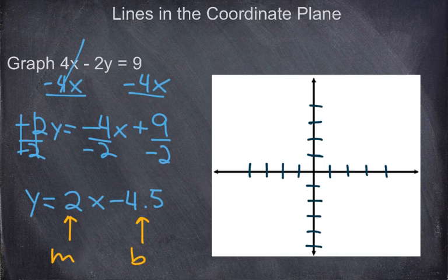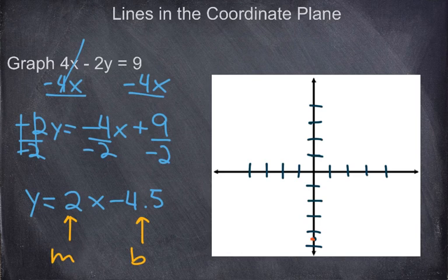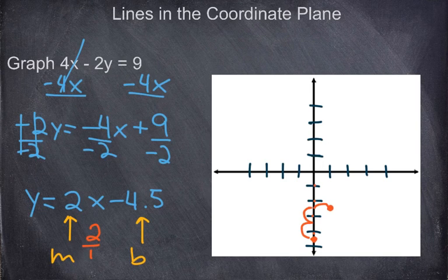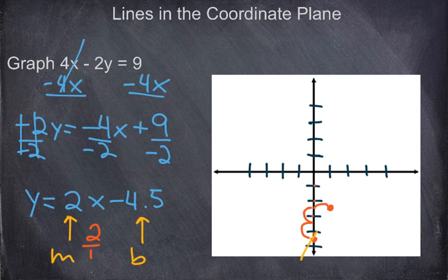Let's graph this equation. Always graph the y-intercept first — in this case negative 4.5, so go down 1, 2, 3, 4.5. It won't always land on a whole number. From there, apply the slope of 2 over 1 — rise 2 and run 1. Go up 2 full amounts and then over 1. Now connect the dots and there's your line.